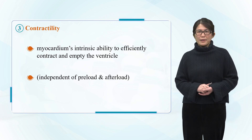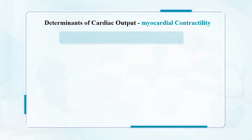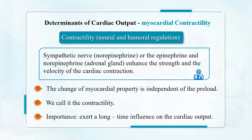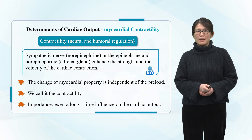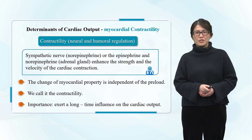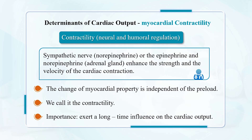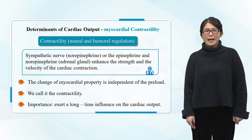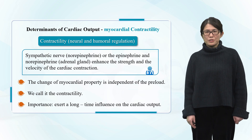Changes in myocardial contractility independent of preload have an important long-term influence on cardiac output. Sympathetic stimulation increases cardiac contractility. At rest, the heart is under sympathetic tone. Parasympathetic stimulation has little effect on contractility due to the sparse innervation of the ventricles by the parasympathetic nervous system.